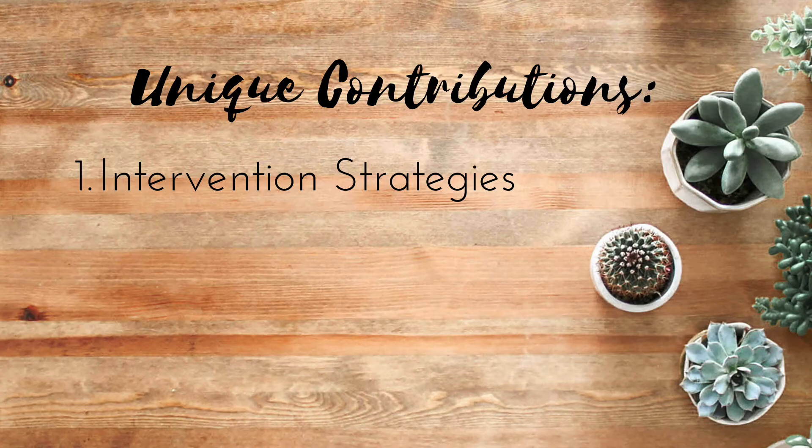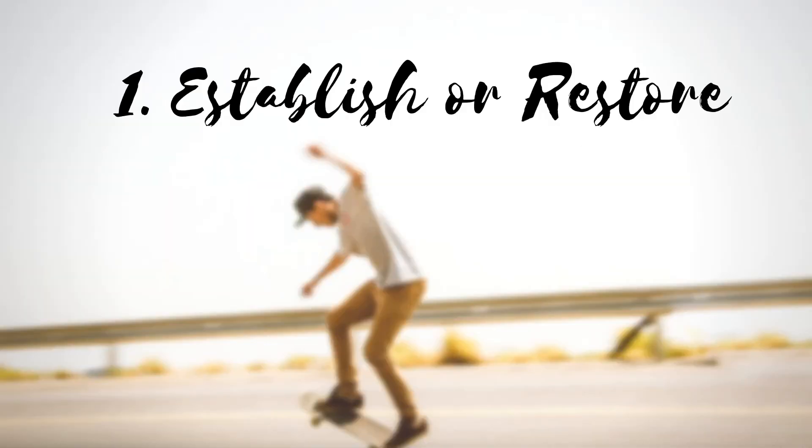EHP has specific intervention strategies built within its model, which allows it to be used as both a model of practice and a frame of reference. The model outlines five intervention strategies. The first strategy is to establish a new skill or restore a skill that was lost, focusing on person factors. In Joey's case, this might mean restoring active range of motion of muscles that still have neurological connection, such as reengaging diaphragmatic muscles to establish deeper and more effective breathing.